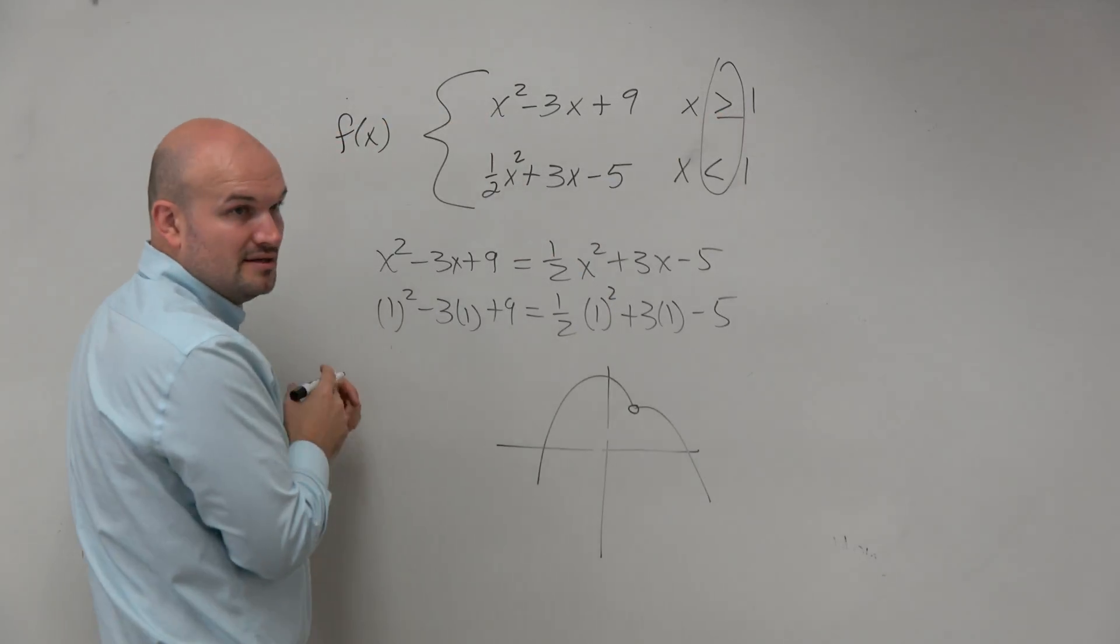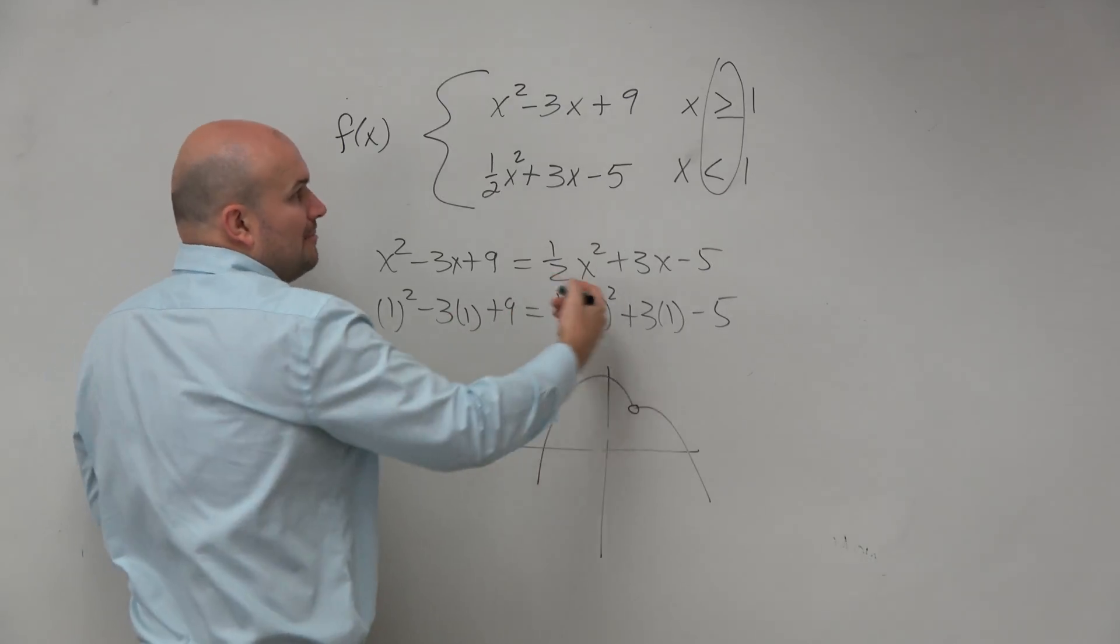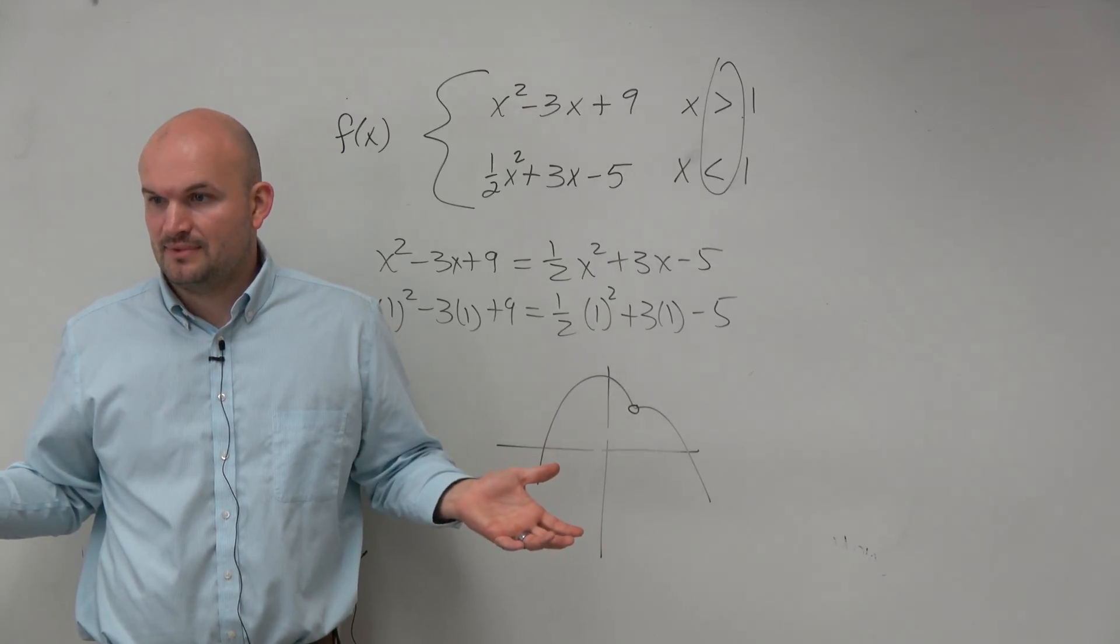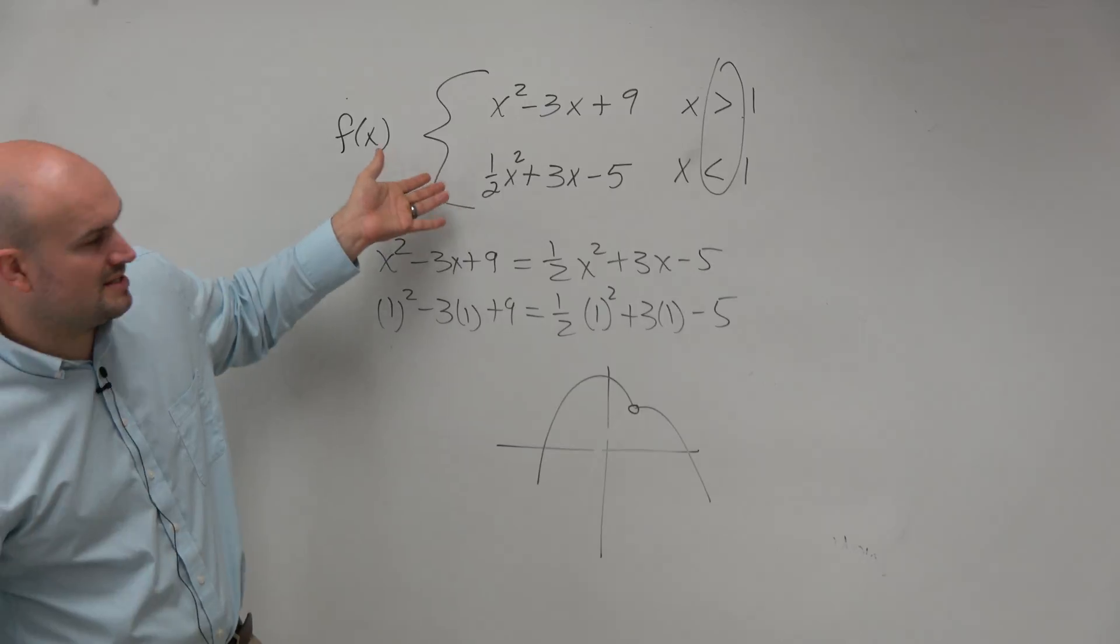Obviously, if I had something like this, then we could see it. Then we'd have to make sure we check this. But obviously, since there's no equal sign, we know that it's a discontinuous function. Everybody agree with me? So therefore, this is not differentiable because it's not continuous.